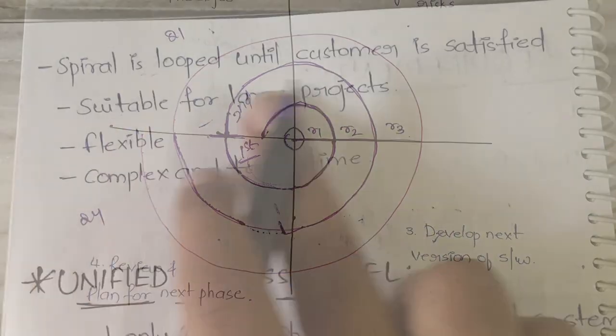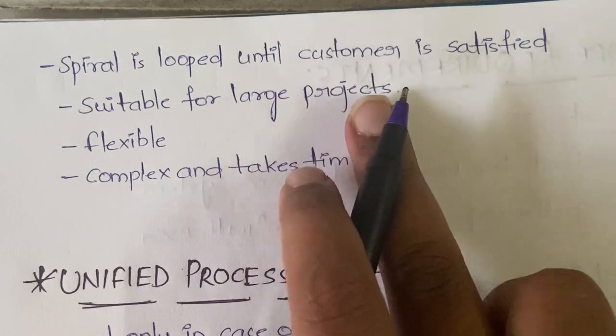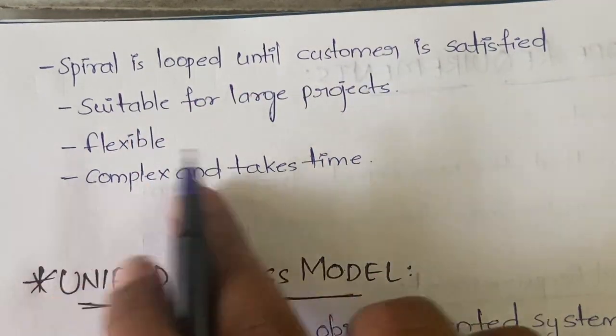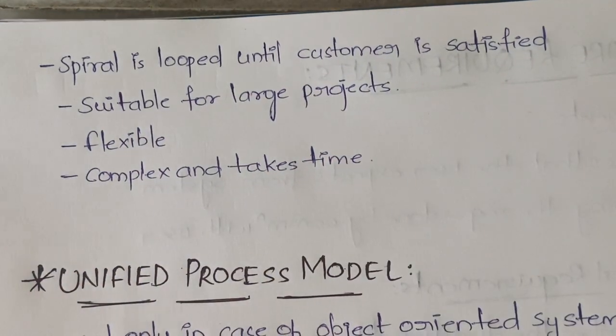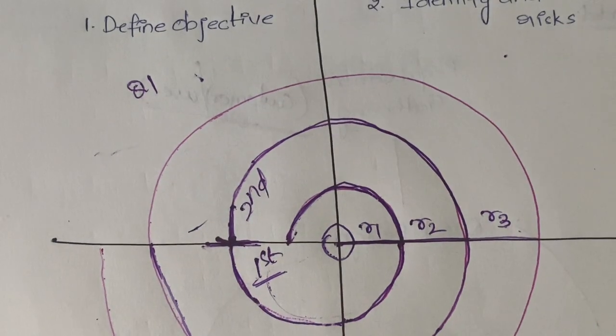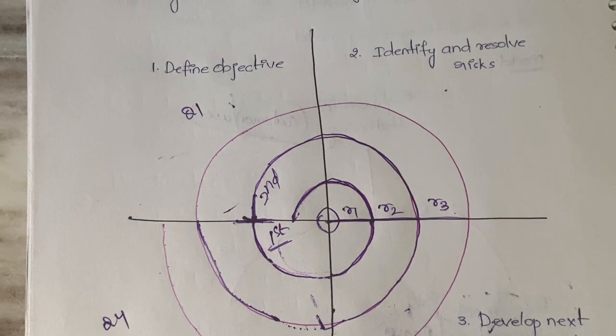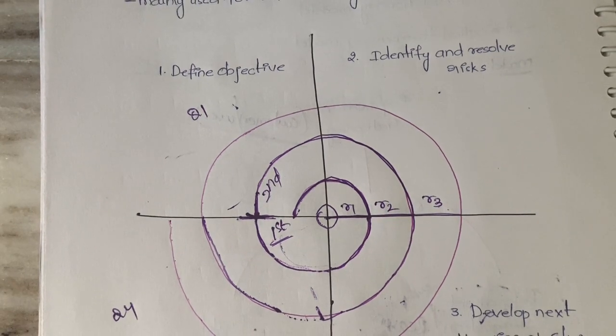The spiral is looped until the customer is satisfied. It is suitable for large projects, and it is also flexible and complex, obviously, and it will take some time. Now let's see the diagram - we have four stages, right? Let's understand what are those four stages. Very simple, they are, don't worry.